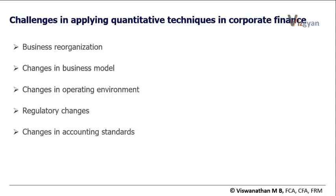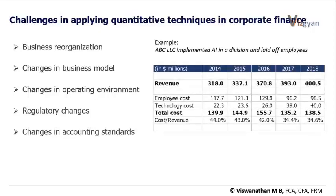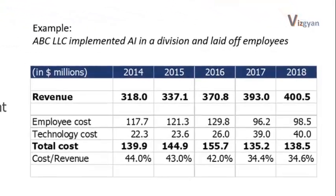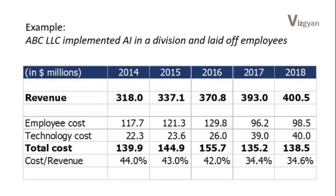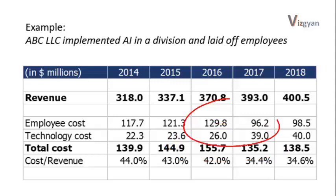Let me explain this with an example. Let us say a company called ABC LLC implemented artificial intelligence in some of its operational areas and let go of some of its human laborers. This would result in a complete change in the company's cost structure and cost components. Now the three-year-old information is of no use in forecasting the future, and with just two years of comparable information, we cannot rely entirely on quantitative analytics — we would have to use some amount of qualitative approach.